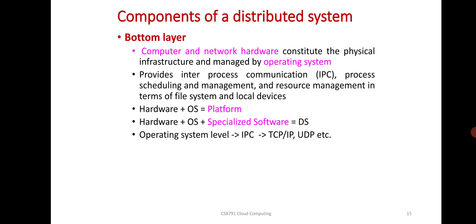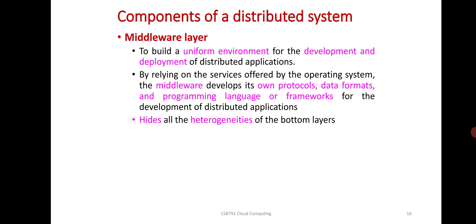Hardware plus operating system plus specialized software is a distributed system. The middle layer, the middleware layer, is to build a uniform environment for the development and deployment of distributed applications. By relying on services offered by the operating system, the middleware develops its own protocols, data formats, and programming languages or frameworks for development of distributed applications. It hides all the heterogeneities of the bottom layer.